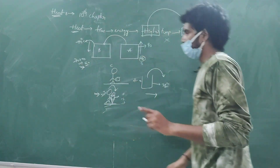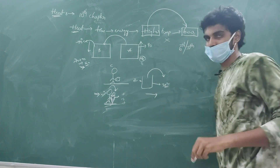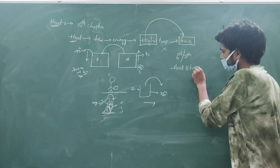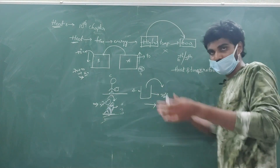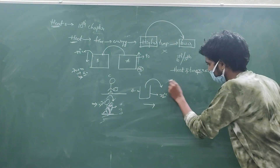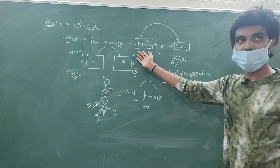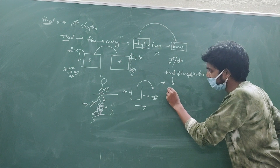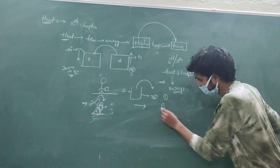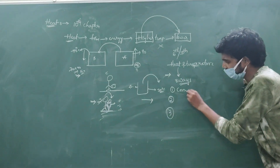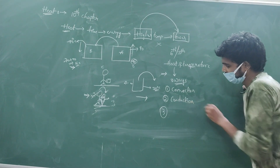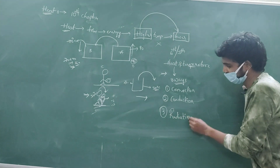In your 6th and 7th class, there is a lesson called heat and temperature. We need a little basics from that. But here in 10th class, heat transfer takes place in three ways: convection, conduction, and radiation. Let's do them one by one.